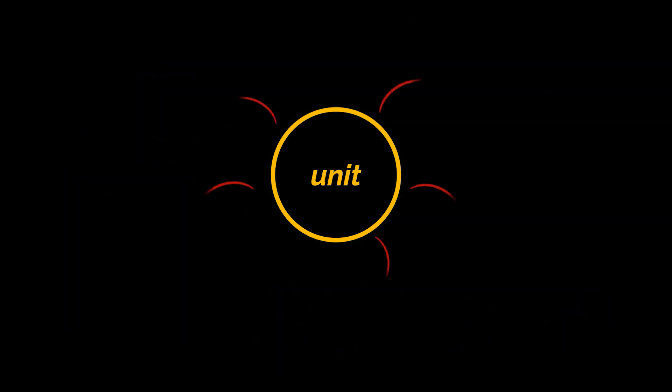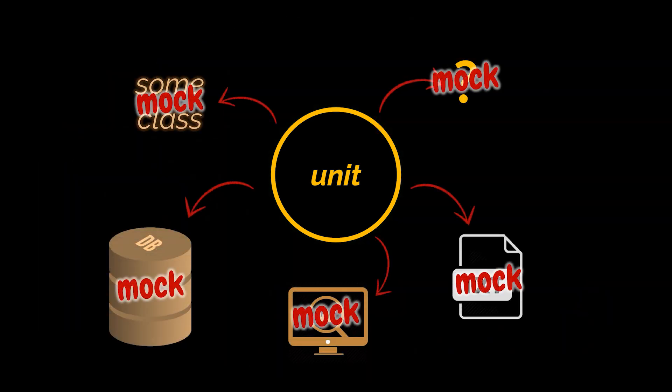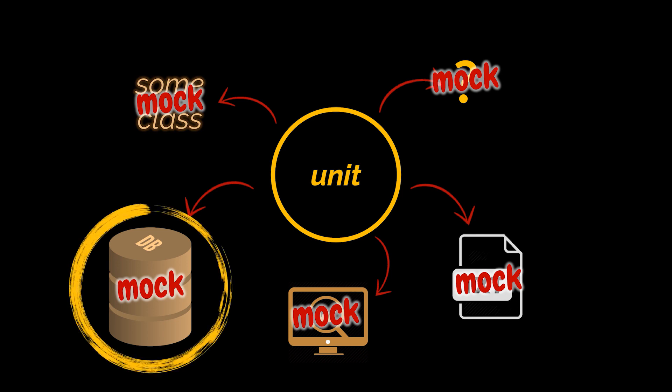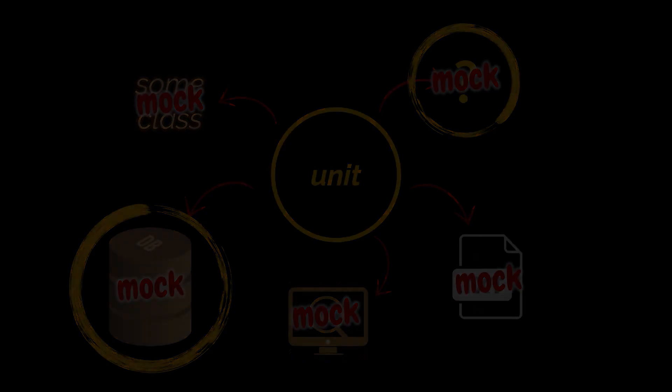One technique that allows us to do that is mock objects. We replace the usage of other objects, other systems, or external dependencies with fake or mock implementations that will repeatedly behave the way we expect them to. So instead of passing a query to a real database, we pass a query to a mock version that's just code, just in memory, and will reliably return the results we want. We can even replace a call to an object that doesn't exist yet with a call to a mock version that behaves exactly as the real one is supposed to.